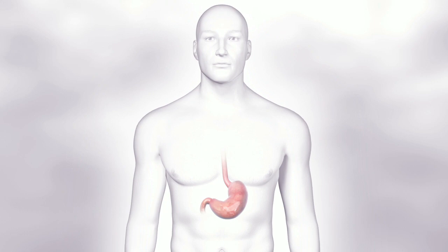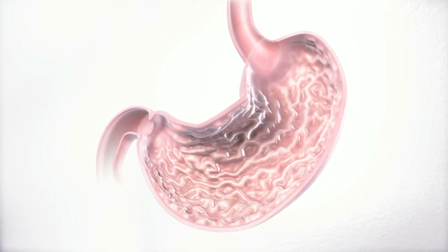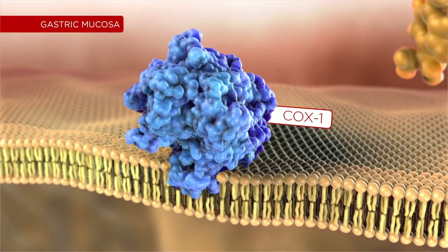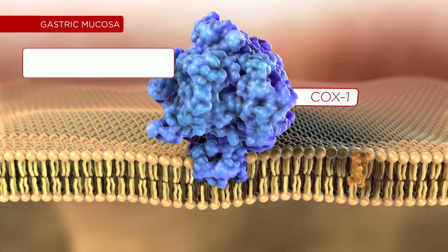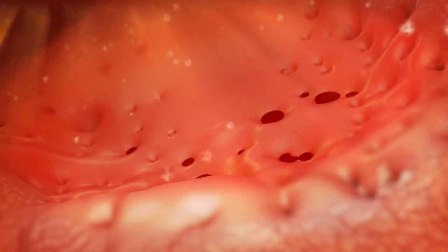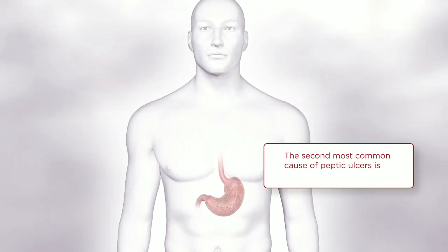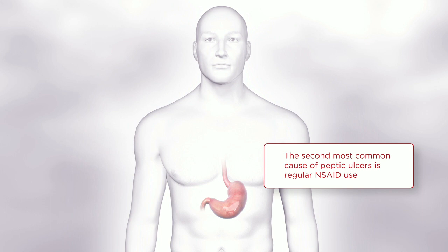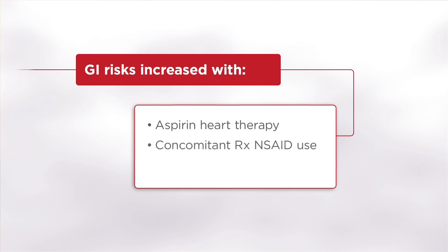The potential gastrointestinal risks of NSAID use are well documented. In the stomach, cyclooxygenase 1 plays an important role in gastric mucosal protection. NSAID inhibition of COX-1 can diminish this COX-1-mediated protective mechanism, leading to GI side effects such as irritation and bleeding. In fact, the second most common cause of peptic ulcers is regular use of NSAIDs. Note that the GI risks of OTC NSAIDs are even greater in certain patients, including those on aspirin heart therapy, those taking prescription NSAIDs, and those on antiplatelet therapies. Take these factors into consideration when you recommend OTC analgesics to your patients.